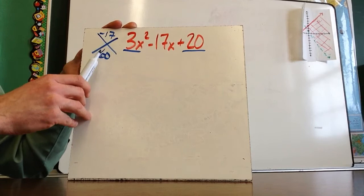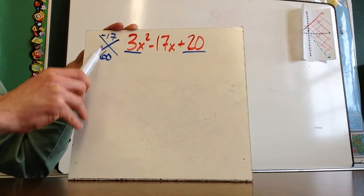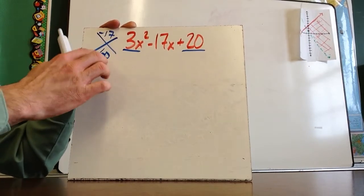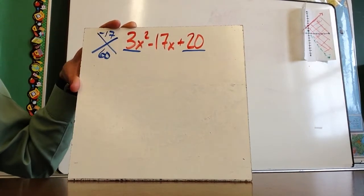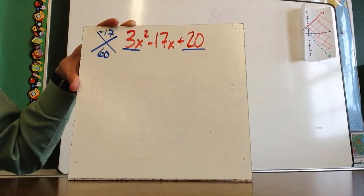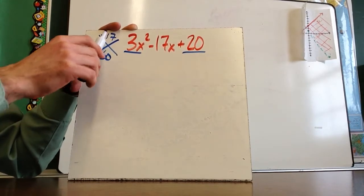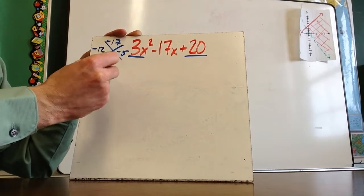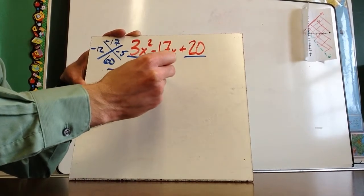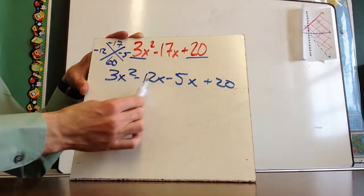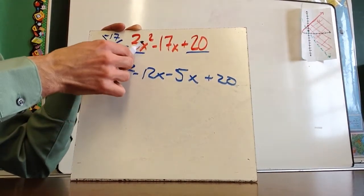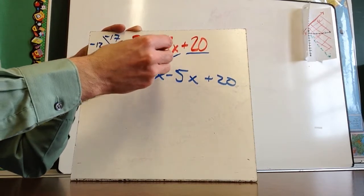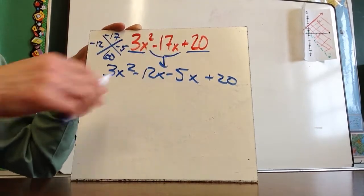One trick we have to be comfortable with: if the product is positive and the sum is negative, then both of these numbers would have to be negative. When I multiply two negative numbers, it will be positive; when I add two negative numbers, it'll still be negative. So I'm looking for two negative numbers that multiplied together give me positive 60 and added together give me negative 17, and that would be negative 12 and negative 5. So I'm going to rewrite this as 3x squared minus 12x minus 5x plus 20. Negative 12 minus 5 is still negative 17, so all I did was rewrite the middle term.